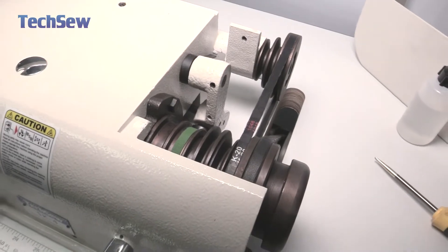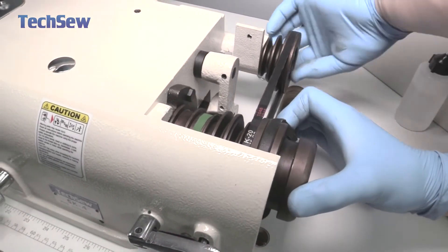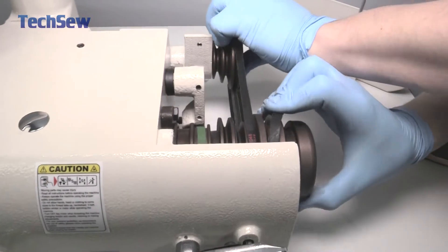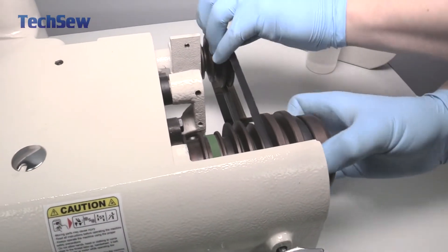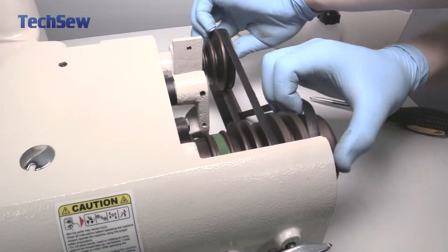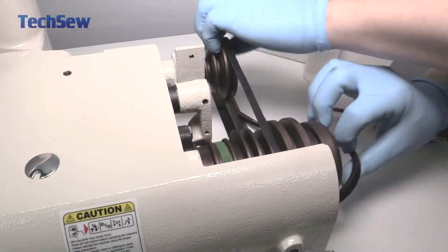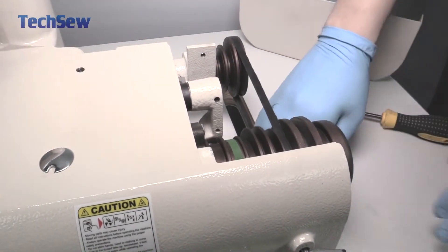Next step we will remove the belt by pulling towards you and rotating the hand wheel. You will first get onto the first hand pulley. Once you have done that you can pull it straight off and stick it to the slot.